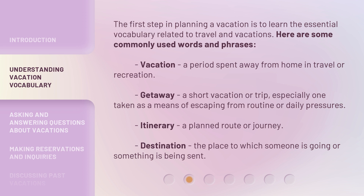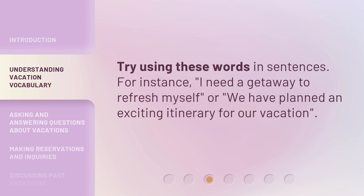Itinerary: a planned route or journey. Destination: the place to which someone is going or something is being sent. Try using these words in sentences. For instance, "I need a getaway to refresh myself," or "We have planned an exciting itinerary for our vacation."